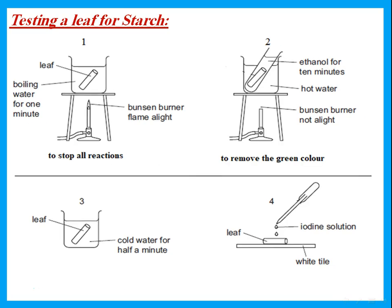If we want to see if a leaf has done photosynthesis or not, we test the leaf for the presence of starch. If the leaf has done photosynthesis, it will store the glucose in the form of starch. If it doesn't have any starch, that means it did not do any photosynthesis. In order to test the leaf for starch, the problem is the leaf is green — I need to remove the green color and stop all reactions.